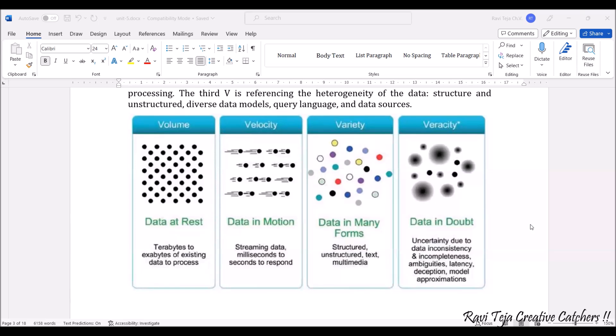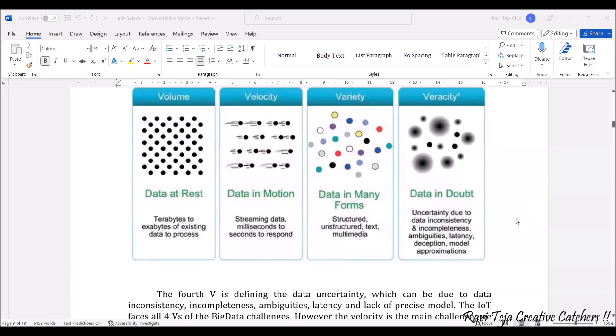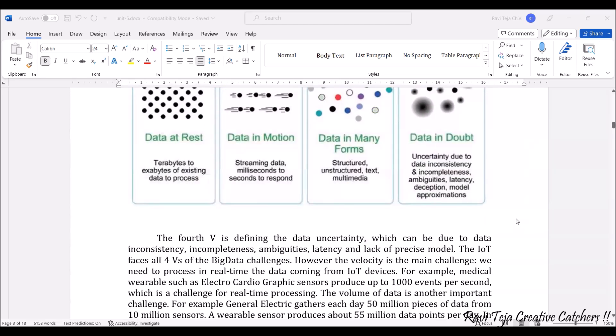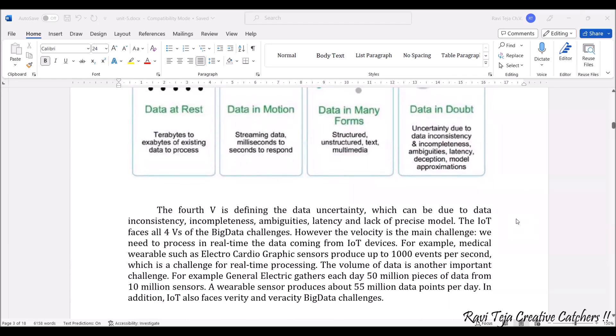Coming to veracity: if the data is incomplete or there is latency, delay, or loss, inappropriate data can be considered as data in doubt. That is veracity, and data in doubt is represented in this manner. All these things need to be considered. Several big data challenges with respect to IoT will be faced - the IoT faces several kinds of big data challenges like storing problems, processing problems - all these things will be considered.